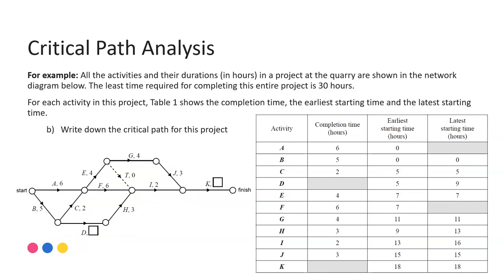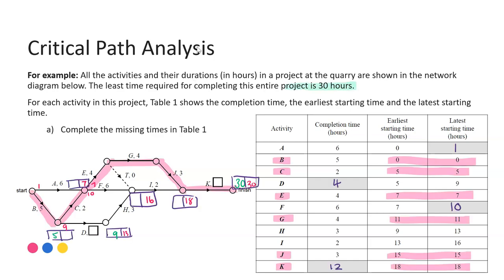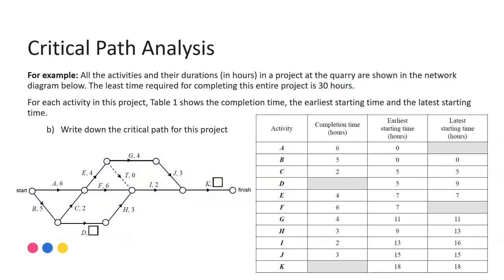Finally, it's asking us to write down the critical path for the project. Going back to our previous findings, the critical path is any activity where the earliest and latest start times are equal - no float time. Running through that sequence: B, C, E, G, J, and K. So writing that down: B, C, E, G, J, K.